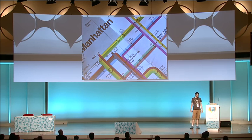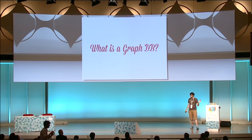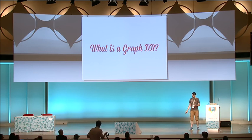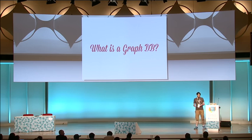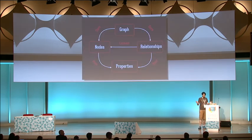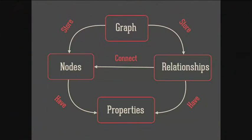But what is a graph database? It's a very simple concept — it's just a database that uses a graph as its main data structure. Today I want to talk about Neo4j, which implements a property graph. A property graph stores nodes and relationships. The relationships connect our nodes, and both can have properties, which are just key-value pairs.